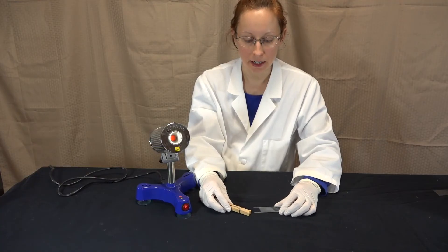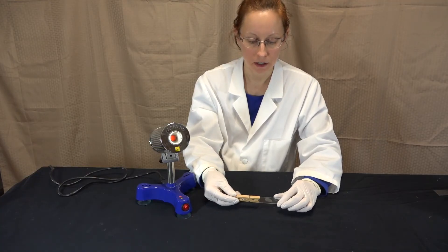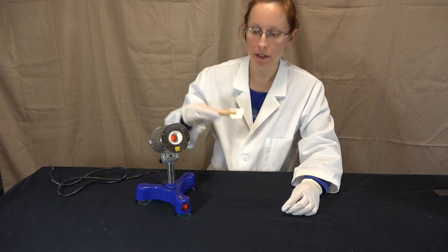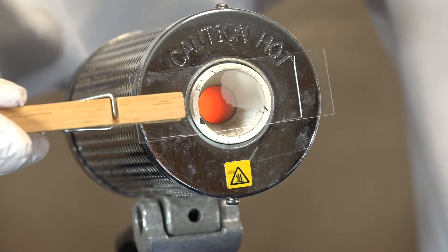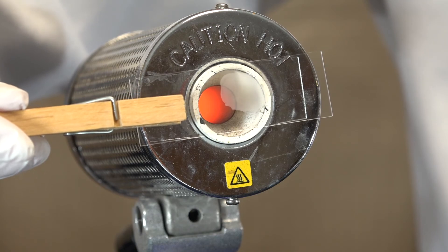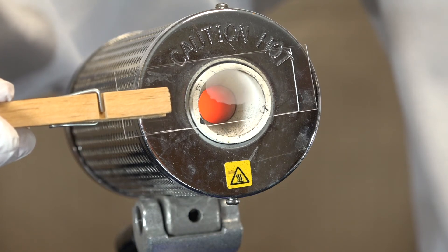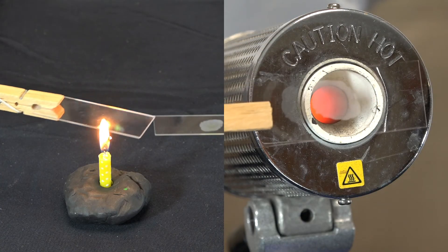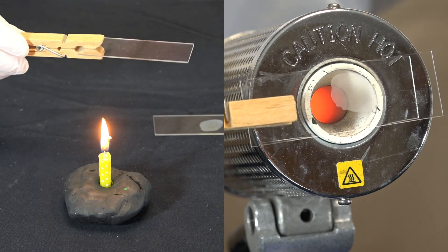I'll heat-fix this slide using the micro-incinerator. With the smear facing away from the heat source, hold the slide about two centimeters away from the mouth of the micro-incinerator for about 60 seconds. Now that your slides are heat-fixed, they are ready to be stained.